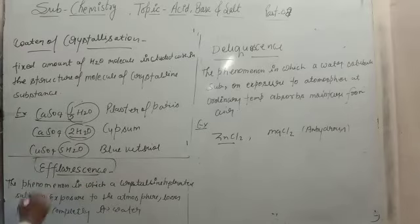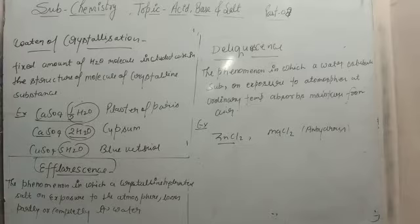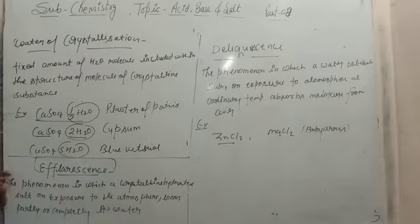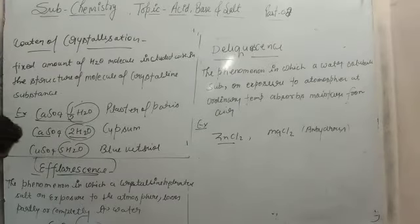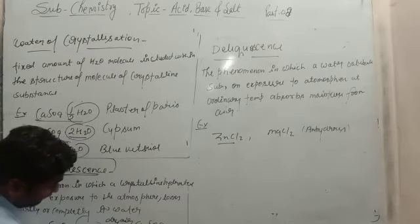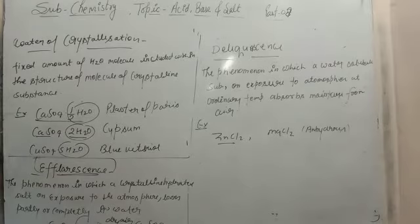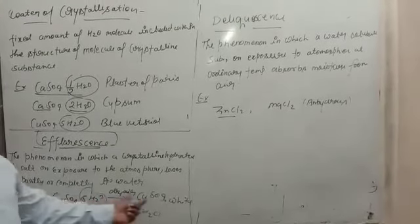Now let's talk about efflorescence. Efflorescence is the phenomenon in which a crystalline hydrated substance, when exposed to air, loses its water of crystallization. For example, CuSO₄·5H₂O has five water molecules in the crystal. On exposure to dry air, it converts into anhydrous CuSO₄ and releases the five water molecules. The blue crystal is converted into white anhydrous copper sulfate.